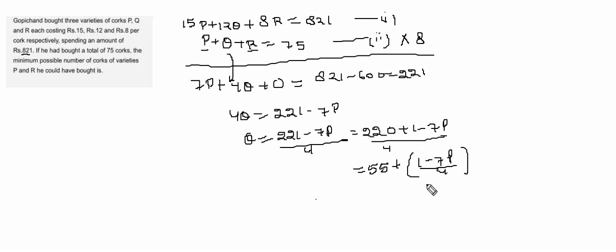This 1 minus 7P by 4 should be an integral value. If you put P equals 0, 1, or 2, it's not an integral value. If you put P equals 3, it's an integral value. That means 55 plus 1 minus 21 by 4. That means it will be 50.